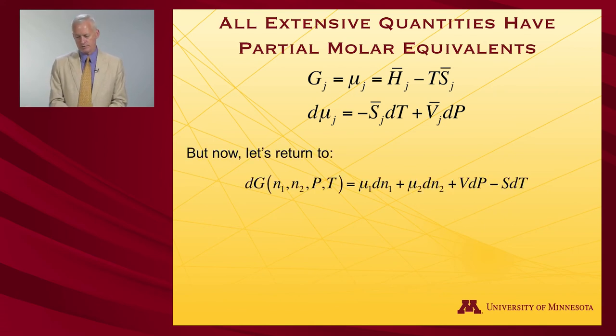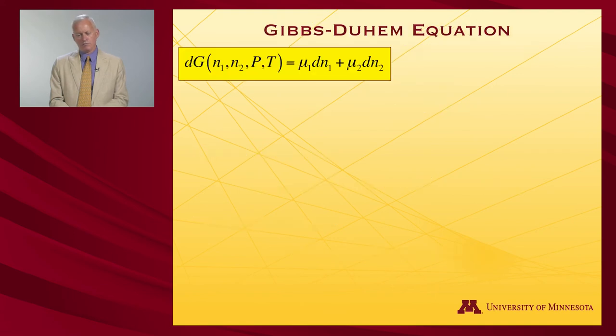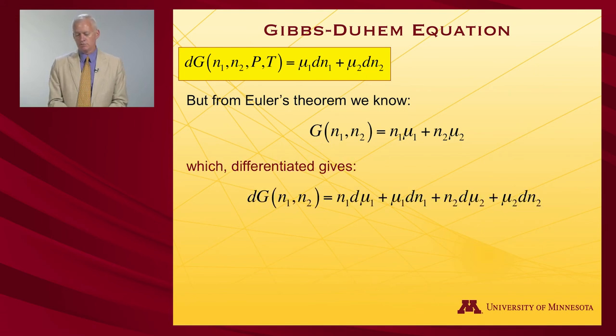But let's come back to the Gibbs free energy. And again, let's work at constant pressure and temperature. So that's the sort of key equation, the operative equation. But we also know from Euler's theorem that the total free energy is n1μ1 plus n2μ2.